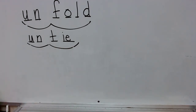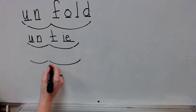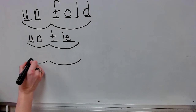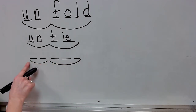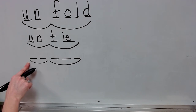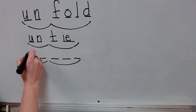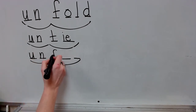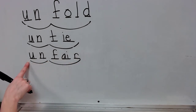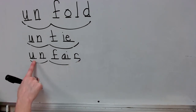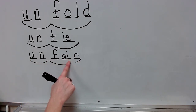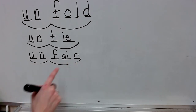The next word is unfair. Syllables are un, fair. Stretch: un, un, stretch fair — f, a, r. Write the spelling for unfair. Check it and correct it. Spell unfair. Yes, unfair.